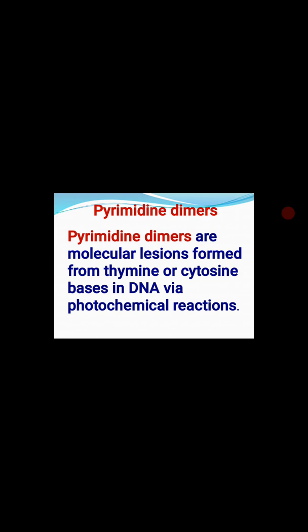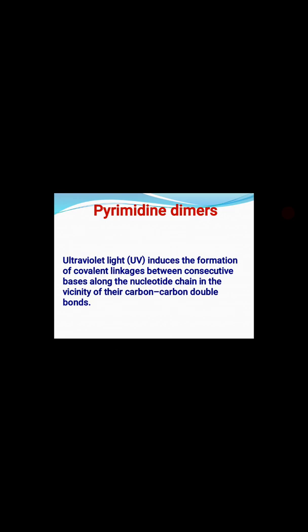Pyrimidine dimers are the molecular lesions found in DNA between two adjacent thymine bases or between adjacent cytosine bases. We always discuss thymine dimers because they are the most frequent, but cytosine dimers also occur — just with much lower frequency. These are molecular lesions formed from thymine or cytosine bases in DNA by photochemical reactions — that is, light-mediated chemical reactions that trigger bond formation between adjacent thymine or cytosine.